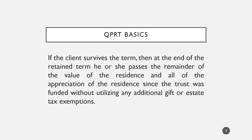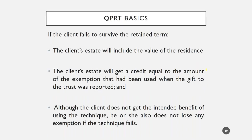If the client does survive the retained term, the residence passes to the remainder beneficiaries. What's nice is that the fair market value of the residence in excess of what was reported as the original taxable gift — which was the present value of the retained term — passes without being subject to estate or gift tax. So it's a way of leveraging your gift tax exemption use to pass additional assets without subjecting them to estate tax.